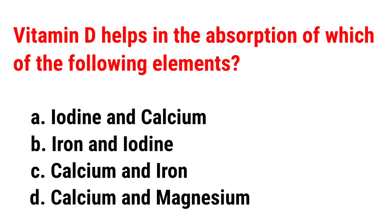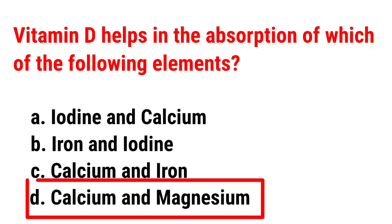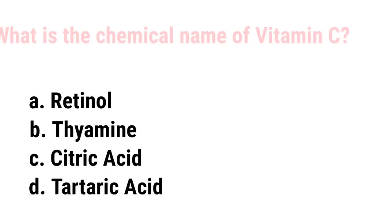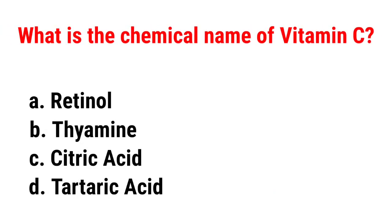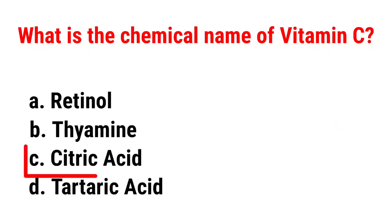Vitamin D helps in the absorption of which of the following elements? Correct answer is Calcium and Magnesium. What is the chemical name of Vitamin C? Correct answer is Citric Acid.